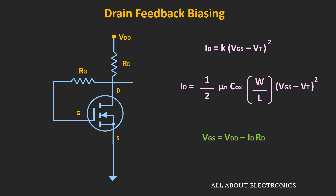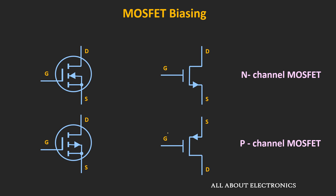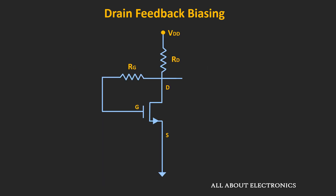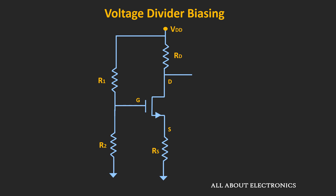Assuming the MOSFET is operating in the saturation region, the drain current ID can be given by the saturation expression. By substituting the value of Vgs from the previous expression, it is possible to find the value of ID. Through the feedback, this configuration also tries to stabilize the operating point: if somehow the drain current ID increases, the voltage Vgs will reduce, and as Vgs reduces, the drain current ID will also reduce. So this circuit tries to stabilize the operating point if there is any change in the drain current. In many textbooks, you may find other symbols for the enhancement type of MOSFET in biasing circuits, but they all represent the same device.